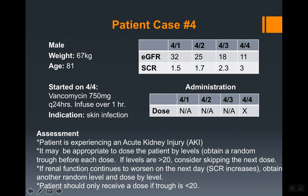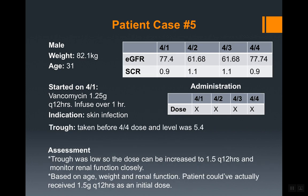If renal function continues to worsen the next day, obtain another level before each dose and ensure the patient only receives a dose when the trough is less than 20. For patient case five, we have a male who is 82.1 kg, 31 years old, with adequate renal function. The patient was started on 1.25 grams every 12 hours for a skin infection. The trough before the April 4th dose was 5.4, which is low. The dose can be increased to 1.5 grams every 12 hours, monitoring renal function closely.